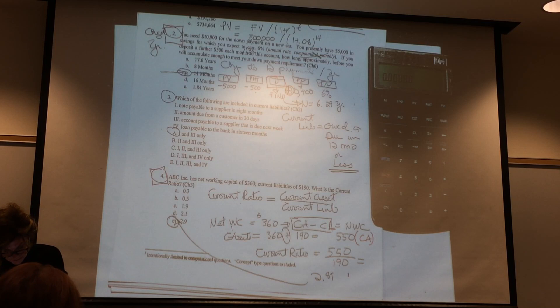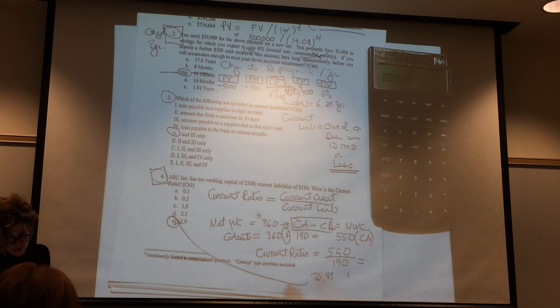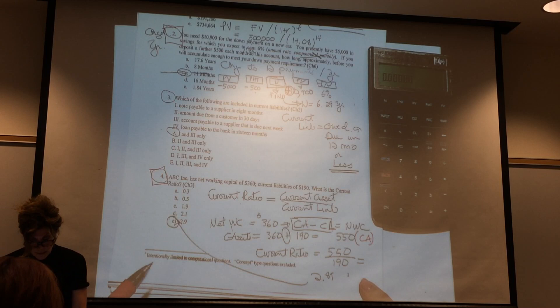So for my current ratio, after I figured out my current assets, because I know what my net working capital is, and I know what my current liabilities is, I divide the current assets by my current liabilities. That means my current ratio is 2.9.